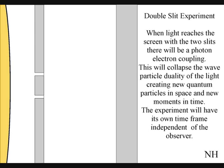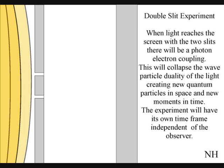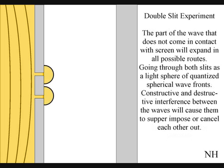In the two-slit experiment, we can see light radiate out, striking objects, creating new moments of time. When the light reaches the screen with the two-slits, the photon will react with the electrons of the screen. This will collapse the wave-particle duality of the light, creating new quantum particles in space and new moments in time.